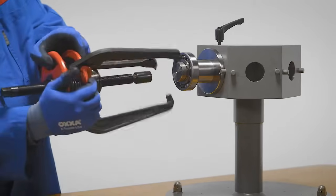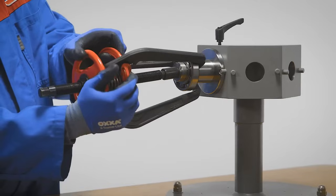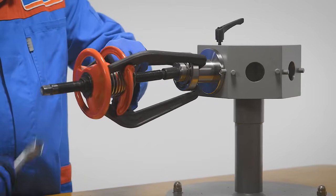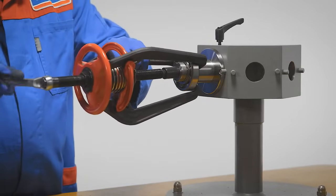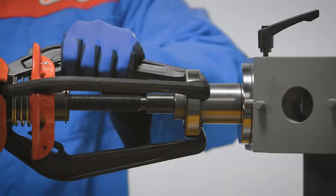For the dismounting of deep groove ball bearings, a number of methods are available depending on the setup of the bearing. The most frequently used method is for bearings with an interference fit on the shaft.